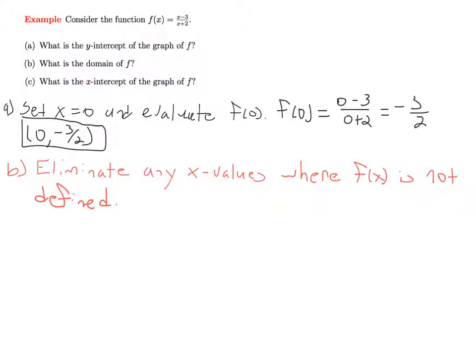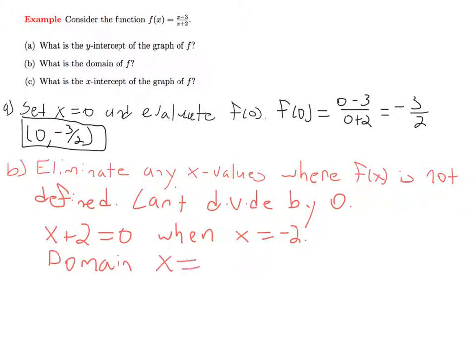So in this case, we've got a fraction. And so when is the fraction going to be undefined? That's going to be when the denominator, x plus 2, is equal to 0. So since we can't divide by 0, we want to make sure that x plus 2 is not equal to 0. And so this equals 0 when x is equal to minus 2.